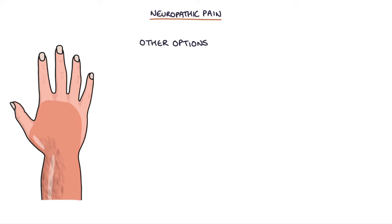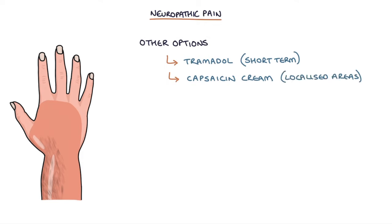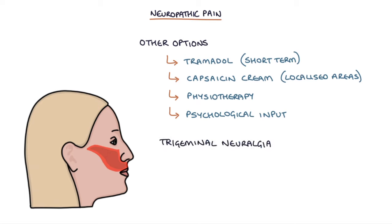Other options for managing neuropathic pain are tramadol — only as a rescue for short-term control of flares — capsaicin cream for localized areas of pain, physiotherapy to maintain strength, and psychological input to help with understanding and coping with the pain. Trigeminal neuralgia is a specific type of neuropathic pain; however, rather than using the typical medications, NICE recommend using carbamazepine first line. If carbamazepine does not work, the patient should be referred to a specialist.